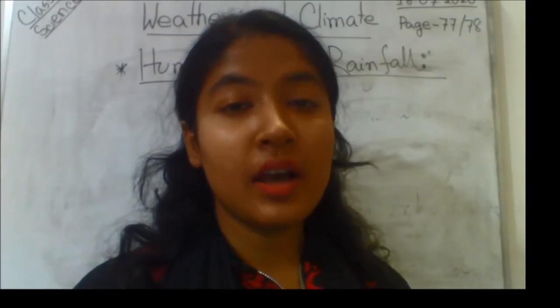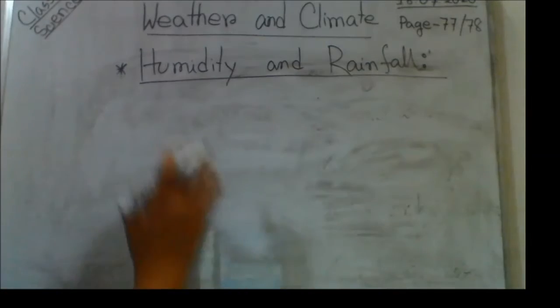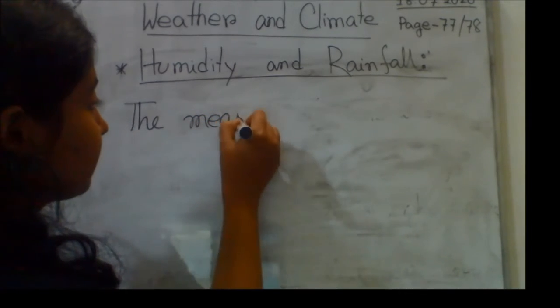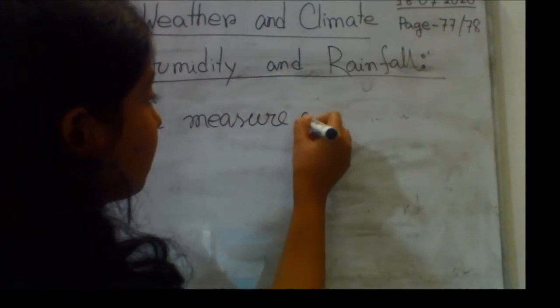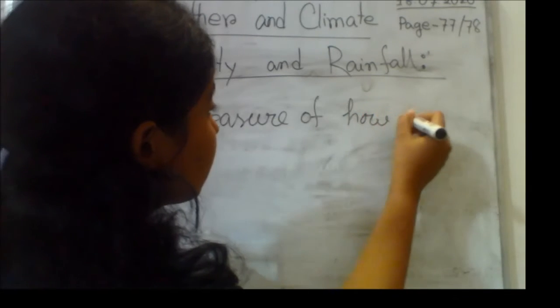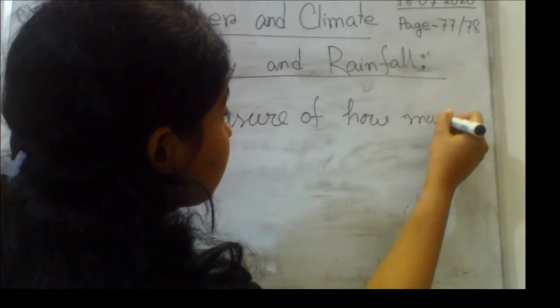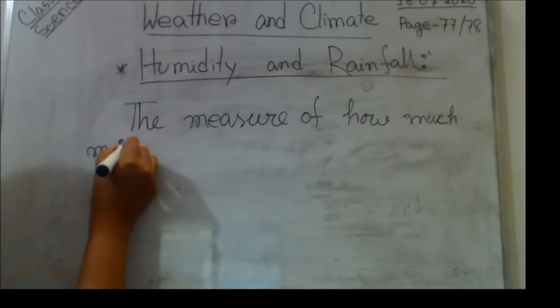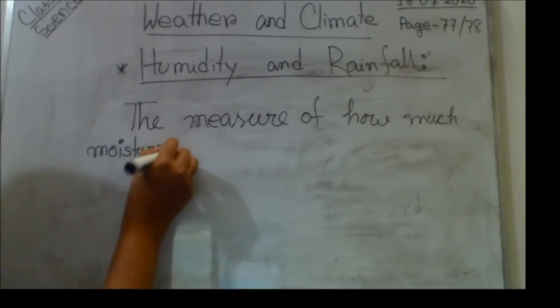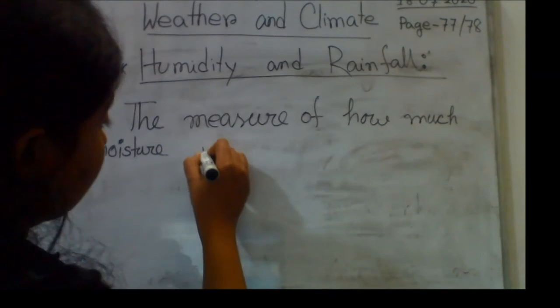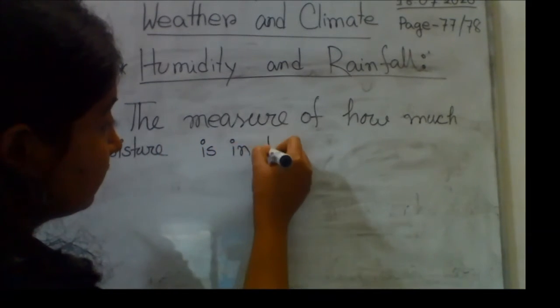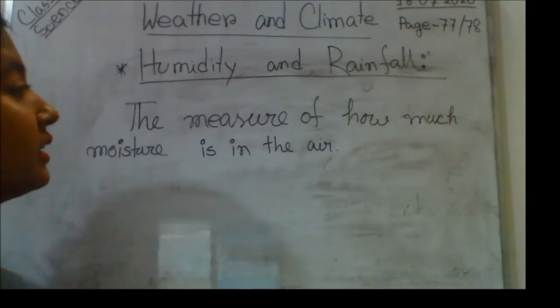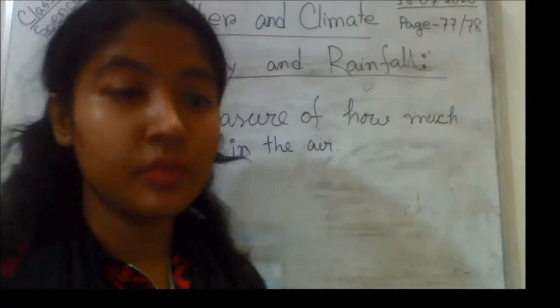The definition of humidity will be: humidity is the measure of how much moisture is in the air. So this is the definition of humidity.